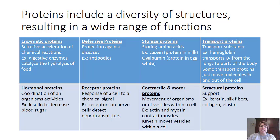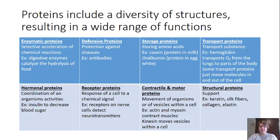Now let's talk about proteins. Proteins include a diversity of structures, resulting in a wide range of functions. We have eight main functions for proteins. First, enzymatic proteins: the selective acceleration of chemical reactions — for example, digestive enzymes that catalyze the hydrolysis of food. Second, defensive proteins: proteins that protect you against disease, with the main example being antibodies. Third, storage proteins: proteins that help store amino acids, with the most common examples being casein, found in milk, and ovalbumin, found in egg whites.